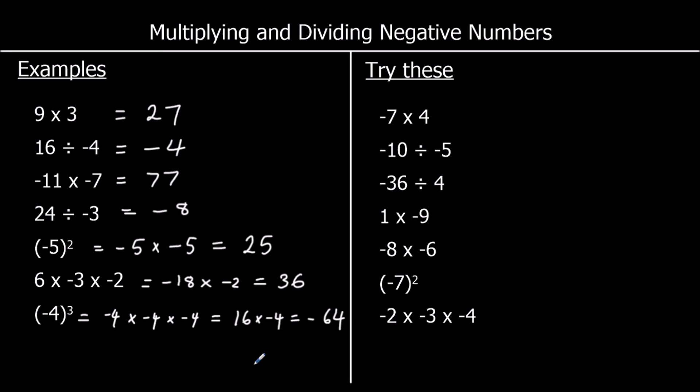OK, some questions for you to try. Pause the video, have a go, and press play when you're ready for the answers. Question 1: a negative times a positive is negative, and 7 times 4 is 28, so negative 28.